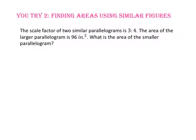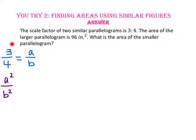Pause the video and do you try number 2. The scale factor of two similar parallelograms is 3 to 4. The area of the larger parallelogram is 96 inches squared. What is the area of the smaller parallelogram? Since we're looking for area, we want the ratio of the areas: A squared to B squared, or 3 squared to 4 squared, which gives us 9 to 16.